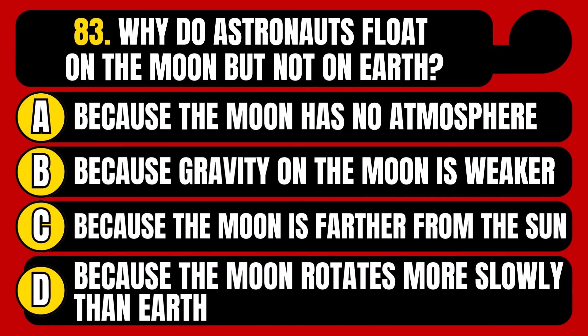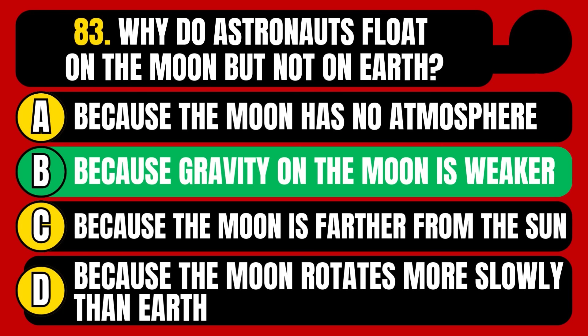Why do astronauts float on the moon but not on Earth? Because the moon has no atmosphere, because gravity on the moon is weaker, because the moon is farther from the sun, or because the moon rotates more slowly than Earth? The correct answer is option B, because gravity on the moon is weaker.